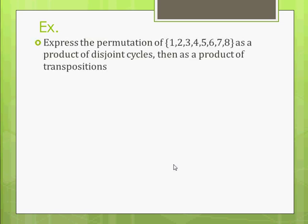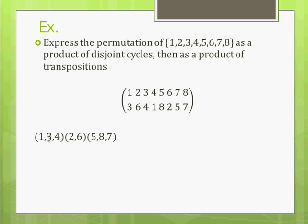So, another problem. Express the permutation as a product of disjoint cycles and then a product of transpositions. So, here's the permutation we're given. And you see that 1, 3, and 4 go between one another. 2 and 6. And 5, 7, and 8. So, we write it like this. 1 goes to 3, which goes to 4, which goes to 1. 2 and 6 go between one another. 5, 8, and 7, and then 5 again.